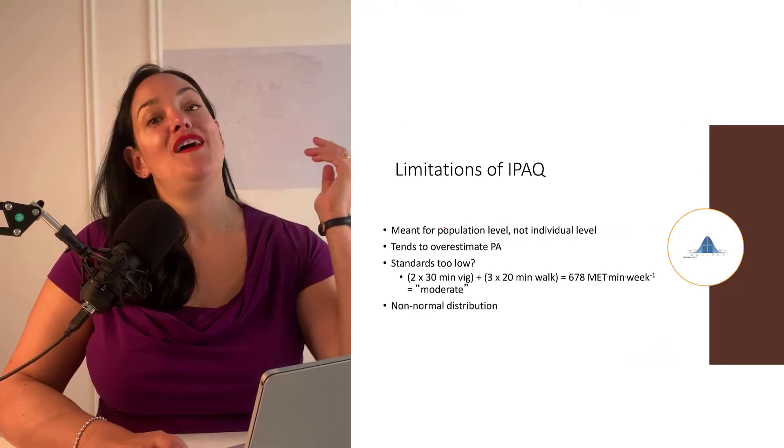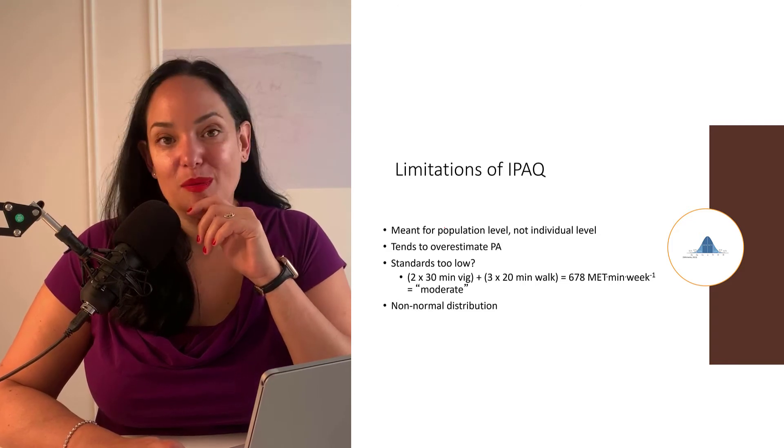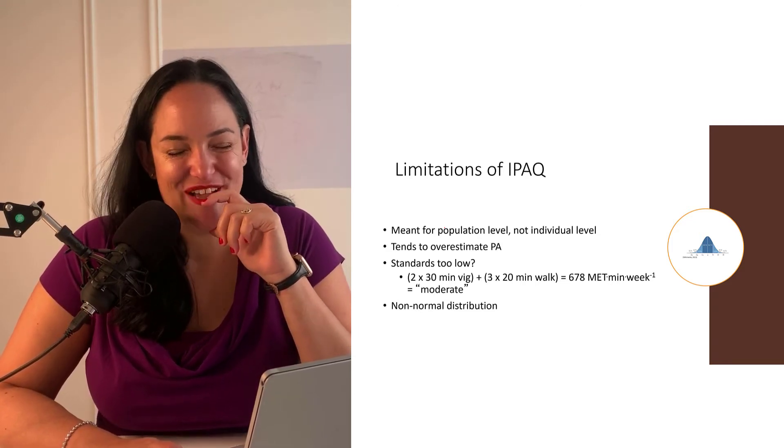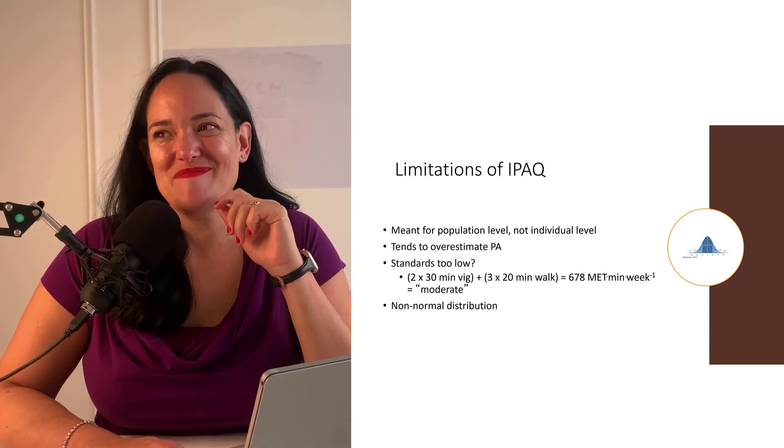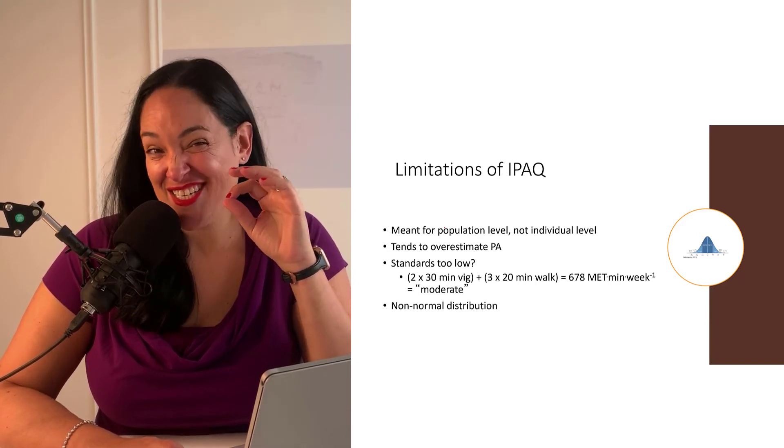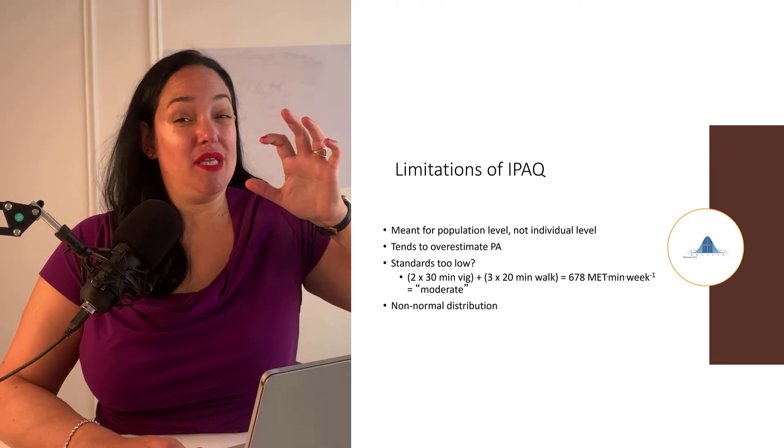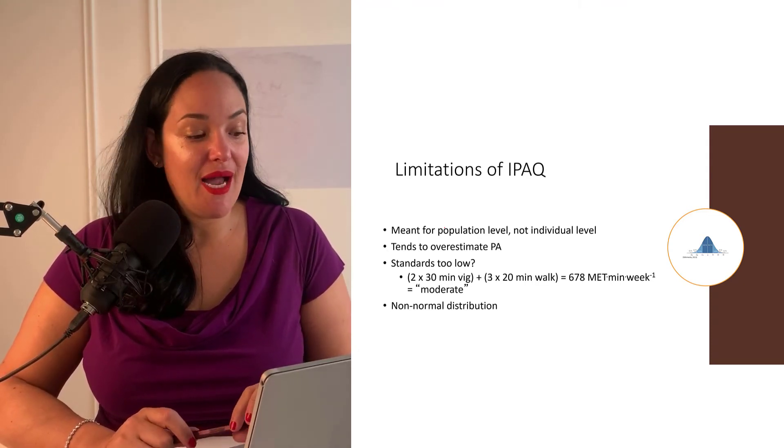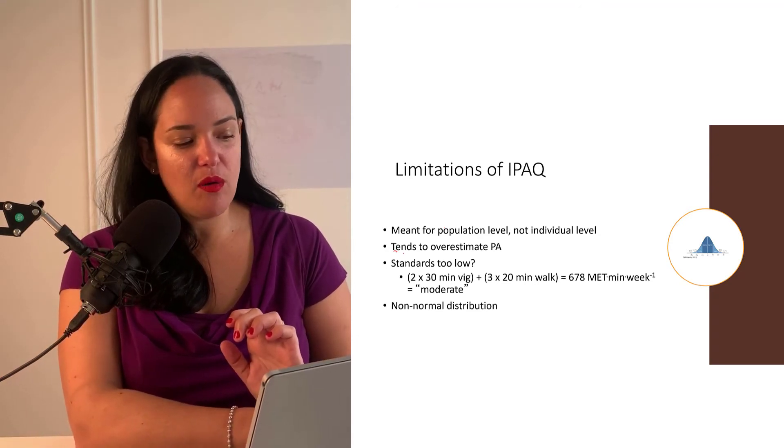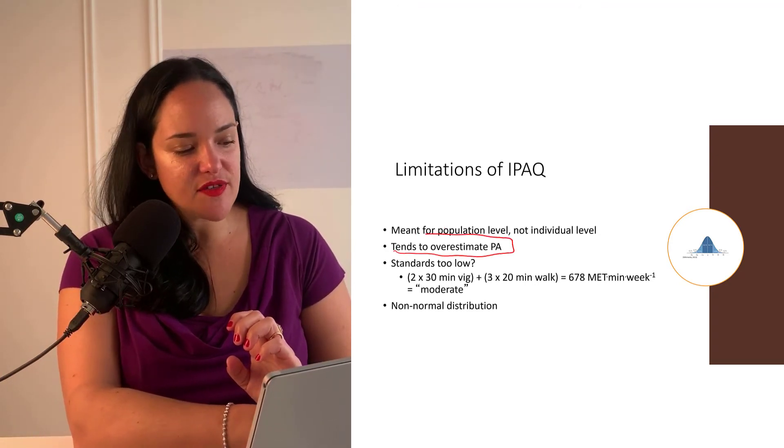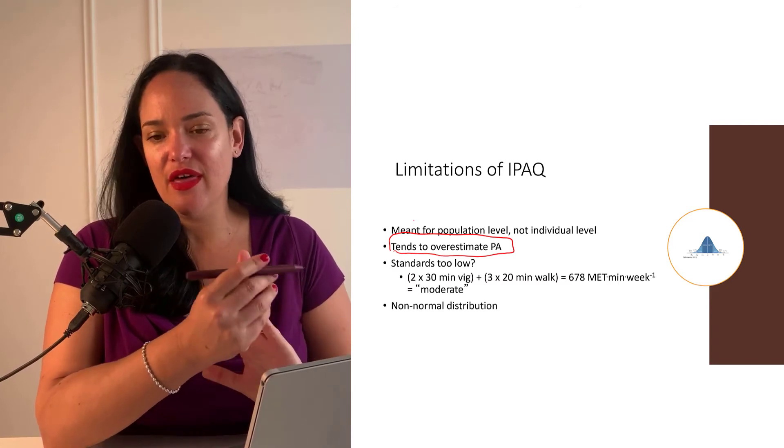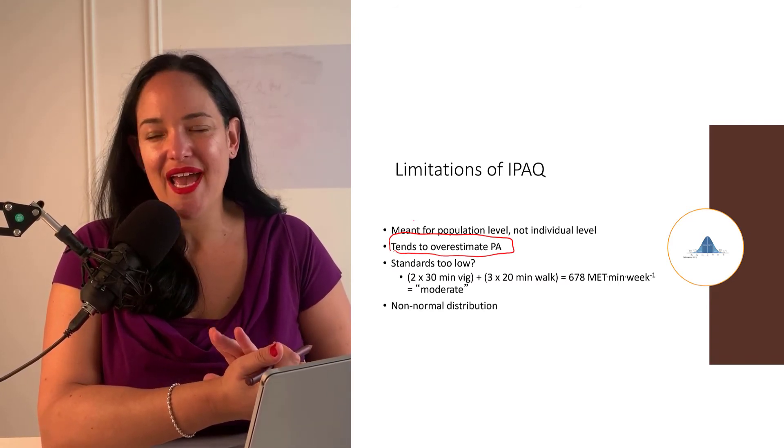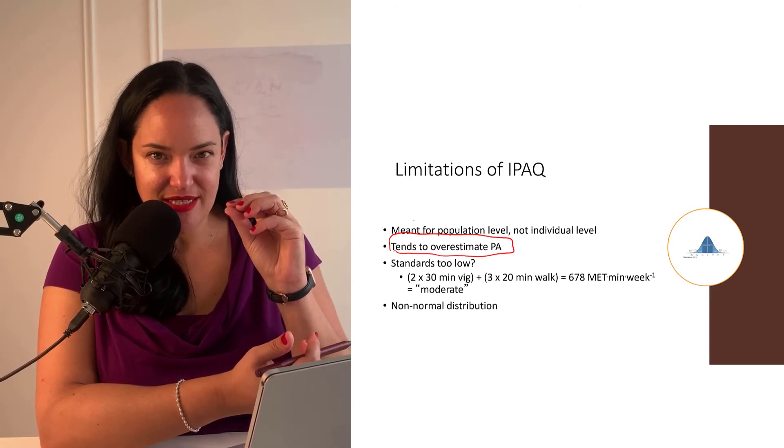So there's lots of limitations of the IPAQ. Probably the biggest limitation is that it's not good. It's not great data. It's okay for getting a general sense at the population level, how active people are, but the IPAQ almost always in a lot of studies, meta-analyses, they often show that the IPAQ tends to overestimate physical activity and it's just not really that sensitive.